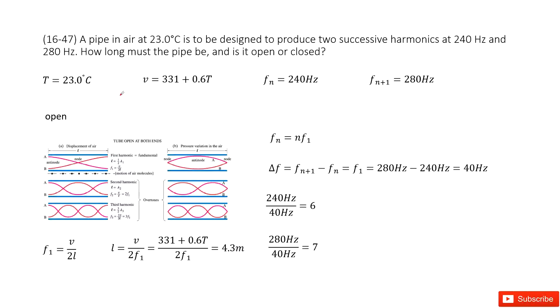Let's look at problem 47 in chapter 16. Chapter 16 is about sound waves. We have a pipe in air at temperature 23 degrees Celsius, and we need to find if the pipe is open or closed if two successive harmonic frequencies are 240 and 280 Hertz. So how can we do that?